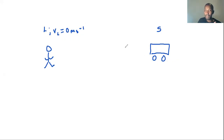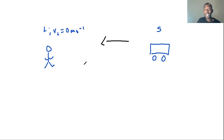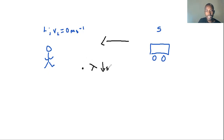As the source moves towards the listener, and because sound is being produced — the siren is on and ringing, or the horn is making sound — each particular wave is emitted from a position closer to the listener than the previous wave. This means that the wavelength of the sound decreases, or the waves are compressed.